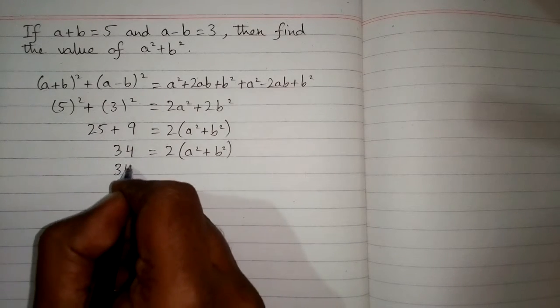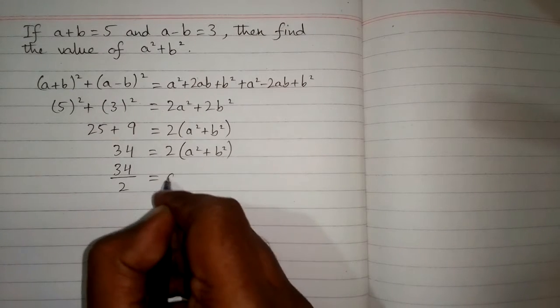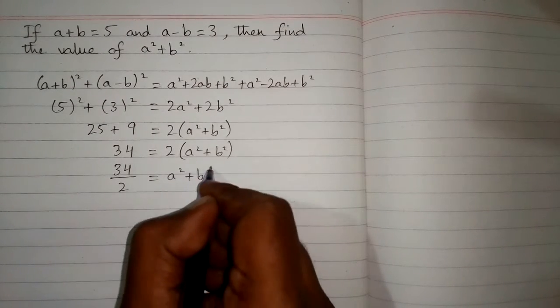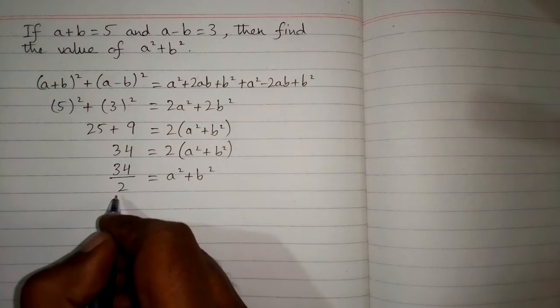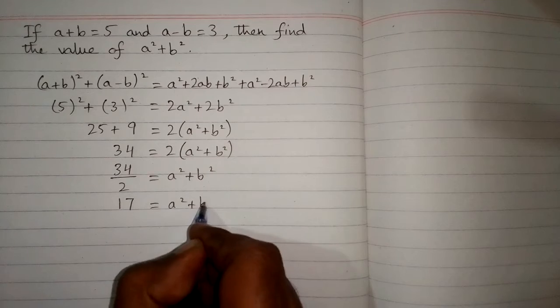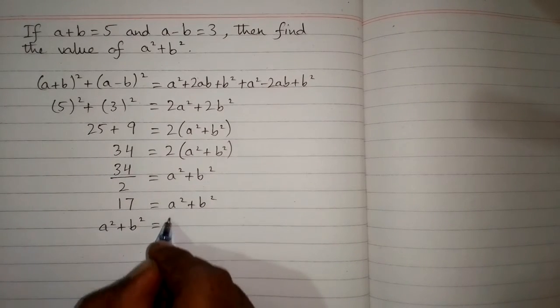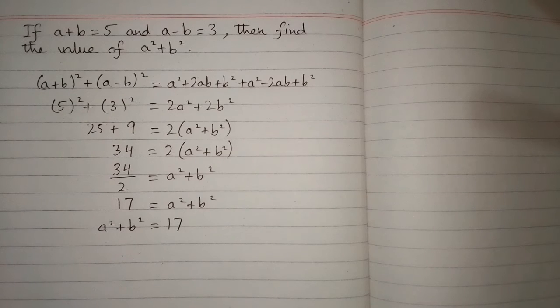Now 34 upon 2 is 17. So the value of a²+b² is equal to 17, and this is the required answer.